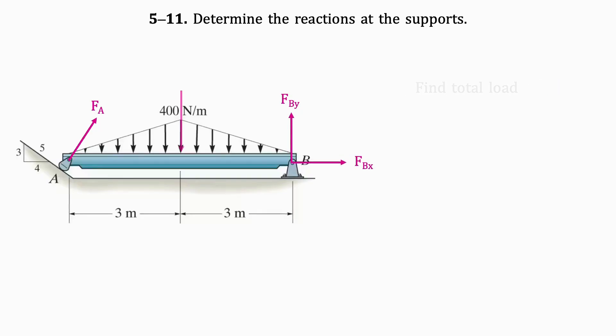Next, we'll find the total load acting at the centre of the beam using the equation of a triangle: one-half base times height, where the height is the given load of 400 N/m and the base is 6 metres. We get that the total load is 1200 newtons.